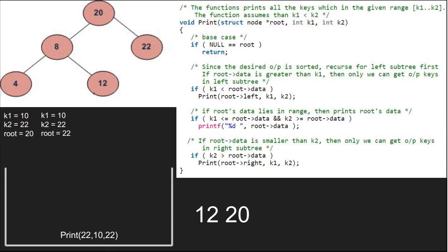Since root is not null, we check if k1 is less than 22. As it is true, we pass the left child of 22 which is null. As root is pointing to null, we return to the previous call. Execution for nodes 22 and 20 is over and we have the final output.